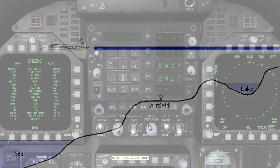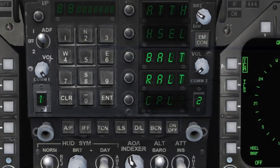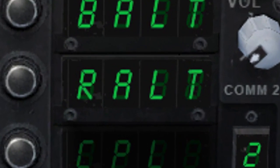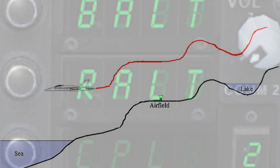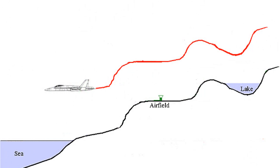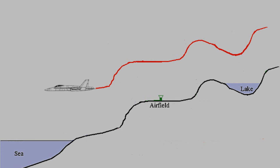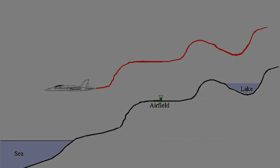Radar altitude hold mode is normally used to maintain a selected altitude above ground level, which is highly desired during low-level flight or in mountainous terrain. Unfortunately, the radar altitude mode has not been modeled in this aircraft and therefore cannot be used.